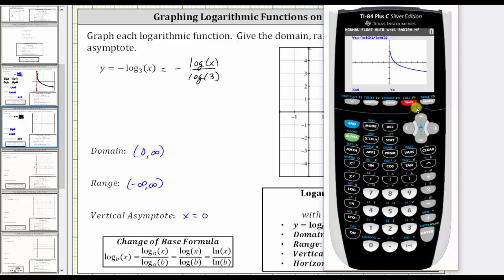But now if we press trace and we scroll along the function, notice how the x value is increased by one-tenth. So if we keep scrolling, we can see the point one comma zero is one point on the graph of the function. Let's scroll out to x equals three. Notice how the point three comma negative one is also a point on the function.